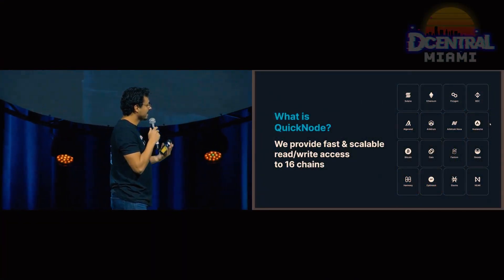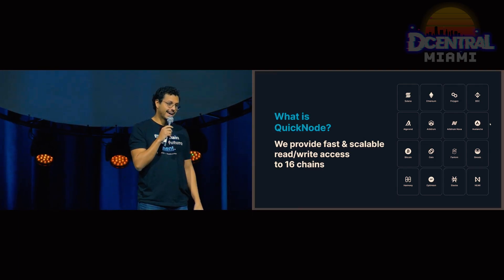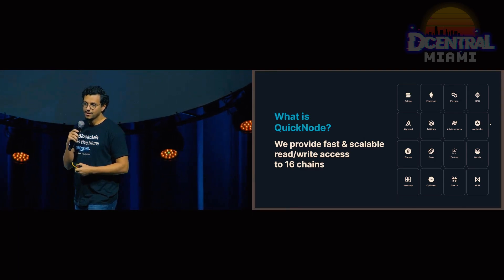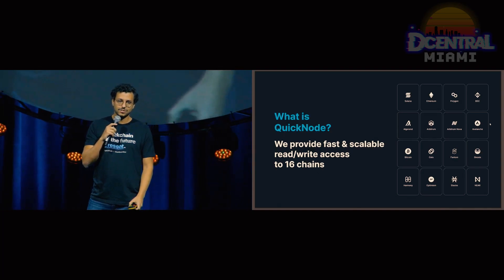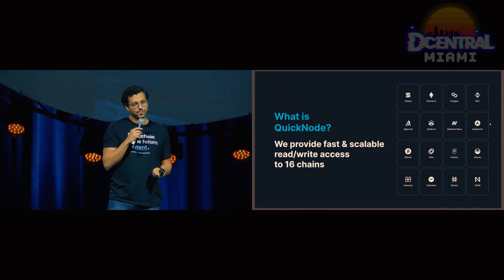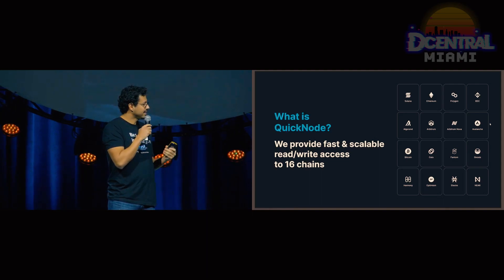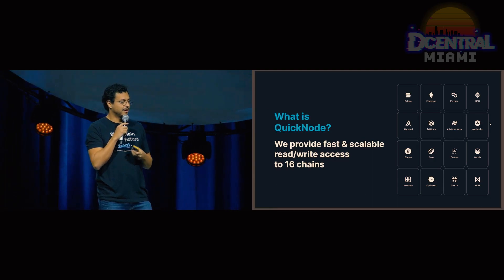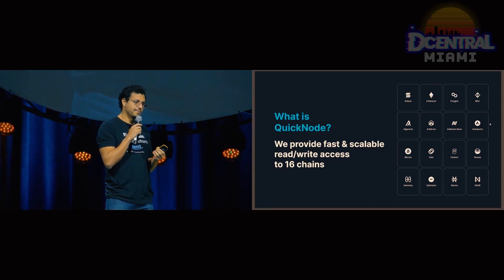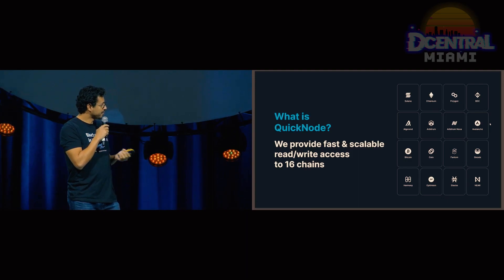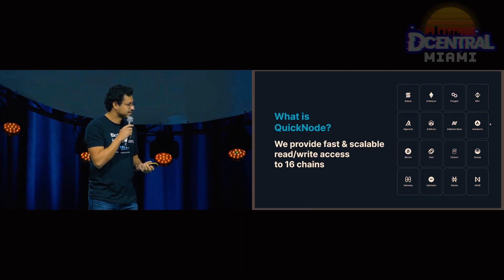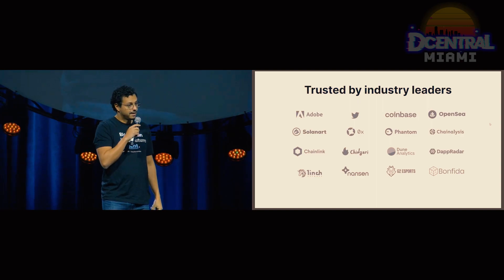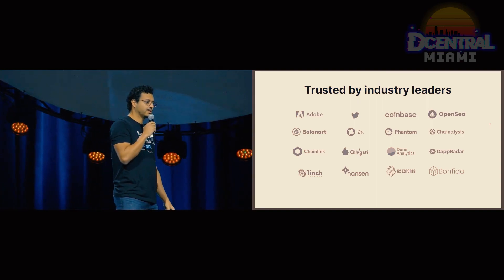What is QuickNode? QuickNode is a blockchain infrastructure provider. What that means is we provide fast and scalable access to read and write from 16 different blockchains. Put a different way, it's kind of like your email provider. If you use MetaMask, you can change which server MetaMask points at. QuickNode provides servers for 16 different blockchains, and we're trusted by many very cool companies.